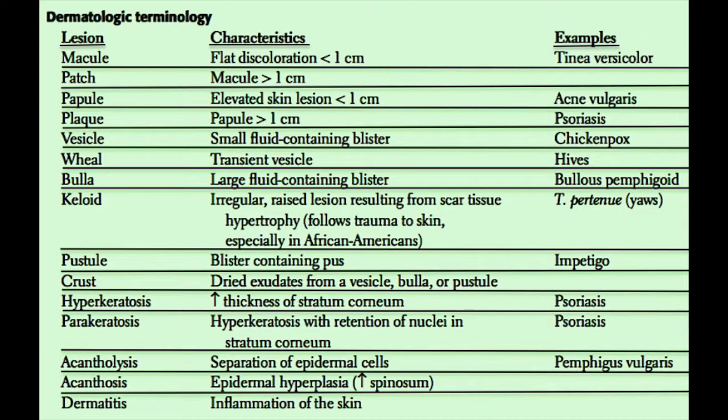Then we have keloids — getting an ear piercing, for example, you'll see a patient with a very large scar tissue formation at the lobe of the ear, and this is very common in African-American patients. Next we have pustules, which are pus-containing blisters. We have crust, defined as a dried exudate from a vesicle or a bulla, commonly seen in chickenpox and also in impetigo, which is a streptococcal or staphylococcal infection of the skin that gets a dry honey-colored yellowness to it. Hyperkeratosis is defined as an increased thickness of the stratum corneum, as seen in a callus formation.